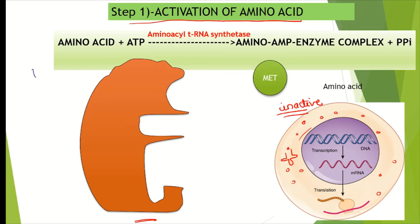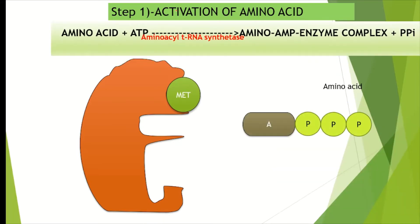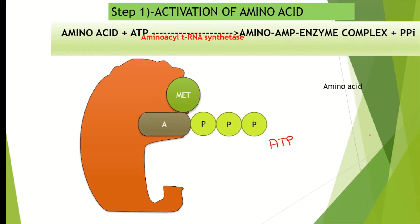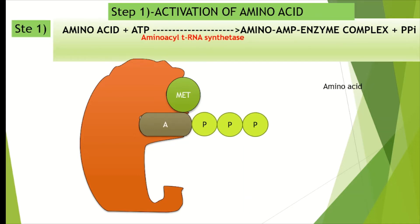Taking methionine as an example: methionine binds to the amino acid binding site of the aminoacyl-tRNA synthetase enzyme. ATP (adenosine triphosphate) also binds to the ATP binding site of this enzyme. Two inorganic phosphates are then removed, resulting in the formation of AMP — adenosine monophosphate — which has a single phosphate attached.